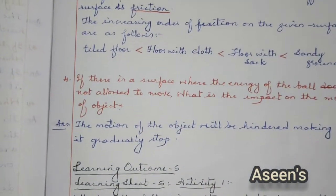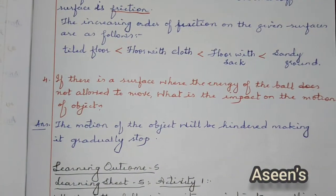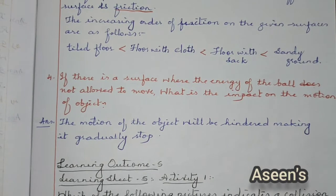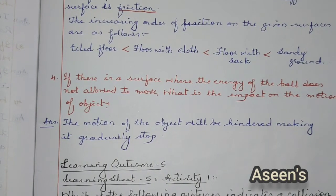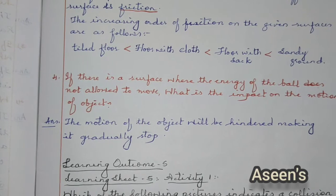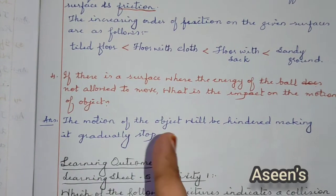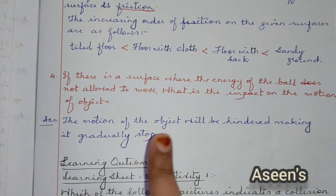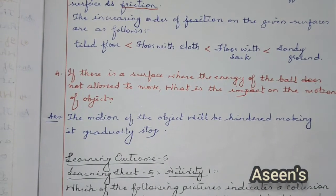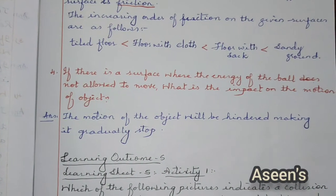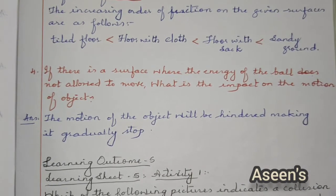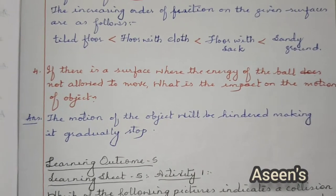For the next question: if there is a surface where the energy of the ball is not allowed to move, what is the impact on the motion of the object? The answer is that the motion of the object will be hindered, making it gradually stop. This marks the end of Learning Sheet 4.